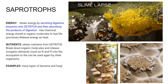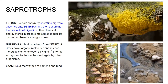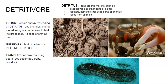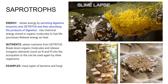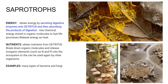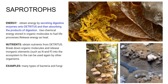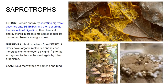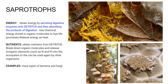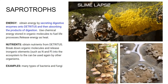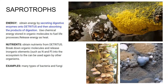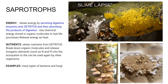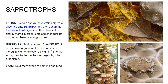Saprotrophs obtain energy by secreting digestive enzymes onto detritus and then absorbing the products of digestion. Unlike the detritivore that actually ingests material with a mouth, saprotrophs digest their food externally and then absorb whatever's left through their cells. They still release energy as heat, and they break down organic molecules and release inorganic elements such as nitrogen and phosphorus into the ecosystem so they can be used again. Many types of bacteria, fungi, and even some protists like slime molds are saprotrophs.